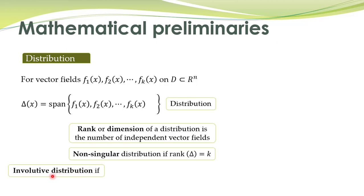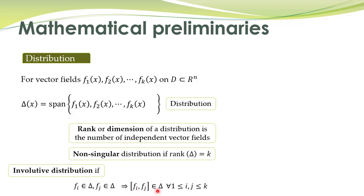Another concept is involutive distribution. A distribution will be involutive if for any two vector fields fi and fj which belong to this distribution, their Lie bracket also belongs to this distribution. If that condition holds for any two vector fields in the distribution, then that distribution is called an involutive distribution.